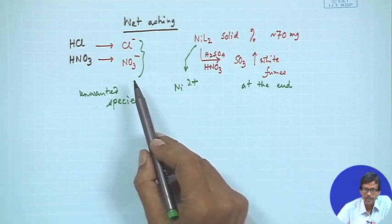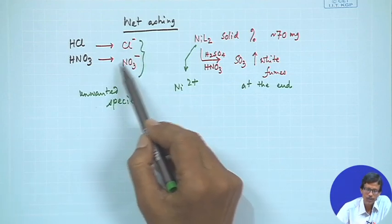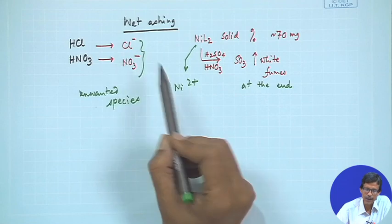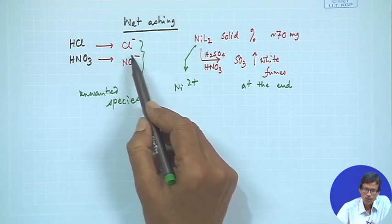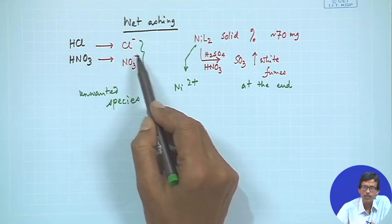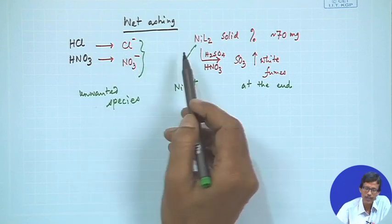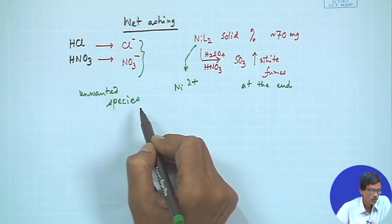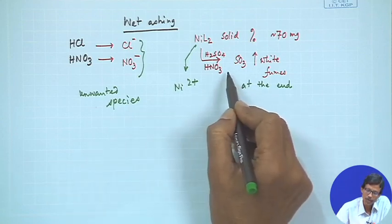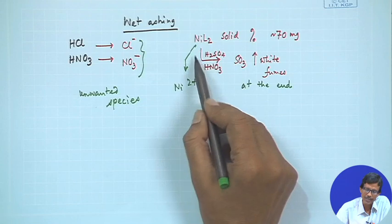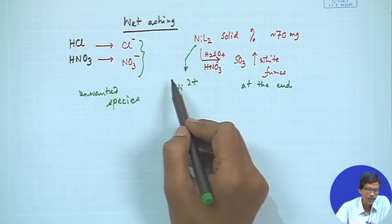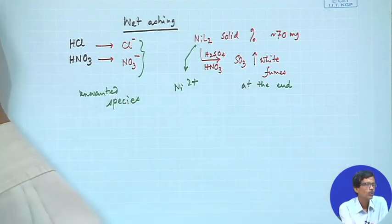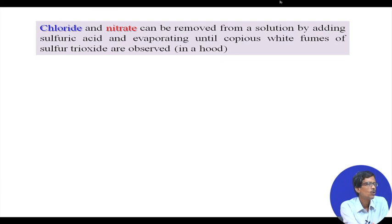These unwanted species — because nitrogen is present in the +5 oxidation state in nitrate, making it highly oxidizing — will interfere with the corresponding subsequent treatment for analysis of the metal ion. So unwanted species should be removed. We can follow the same technique: take sulfuric acid, which will react and generate sulfur trioxide fumes, and that can destroy both chloride and nitrates, so they can be removed.